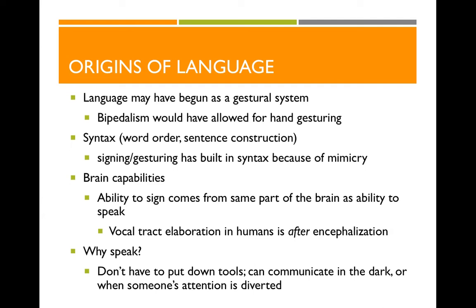So the brain develops for language as our ancestors were signing first, and then vocal tracts come second. We might ask: if our ancestors had signing languages evolving first, what's the point of developing a vocal tract? There are millions of people who communicate perfectly well using only sign language. But there are advantages to verbal communication: you don't have to put your tools down to talk, you don't have to free your hands. For ancestors without electricity, speaking allows communication in the dark, with someone not looking at you, or with someone physically separated from you.